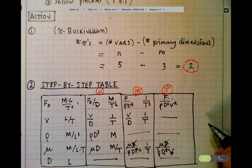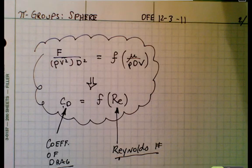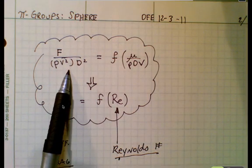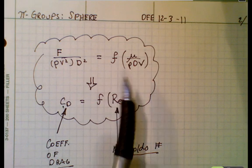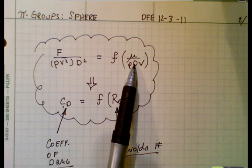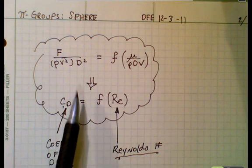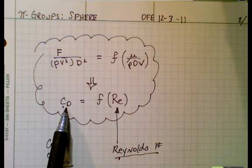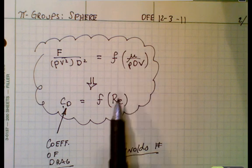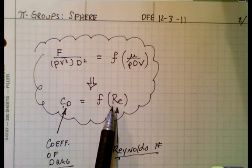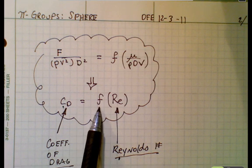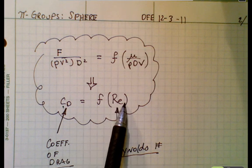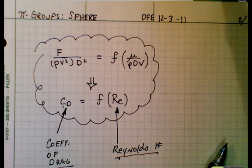So I'm done with the problem. The answer is written as: this pi group is a function of this pi group. Over time, you'll recognize common pi groups. We'll modify this so it becomes the coefficient of drag, and this pi group will become Reynolds number. So we would say the coefficient of drag is a function of Reynolds number. That completes this problem. Hope you enjoyed this solution.